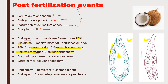The coconut water which we take from the tender coconut is nothing else but the free nuclear endosperm. And the outside white kernel portion is called cellular endosperm.